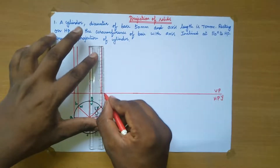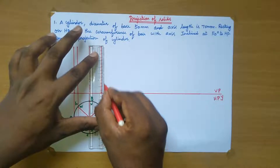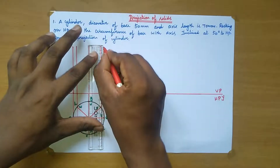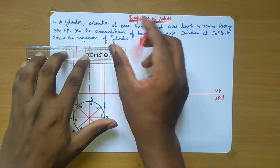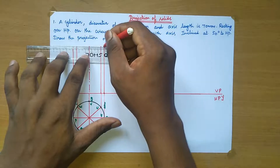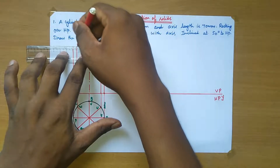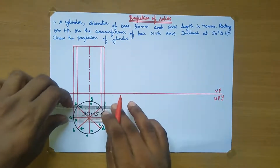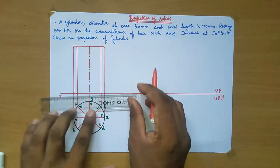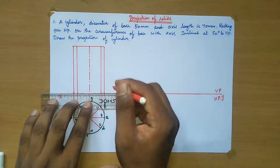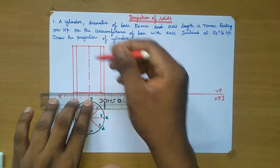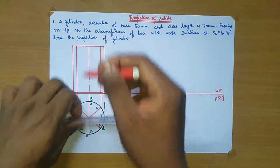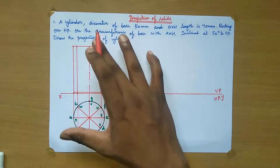From this point, extend the projectors. Again from this point, extend the projectors. Now join this point. With the help of given data, we have developed the front view section and top view section of the cylinder.